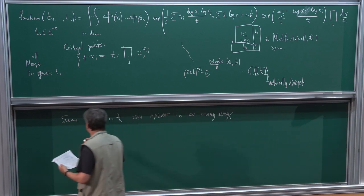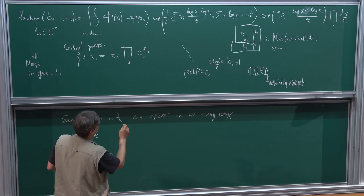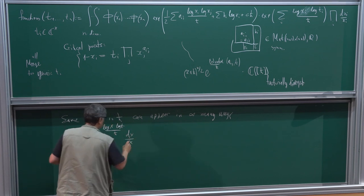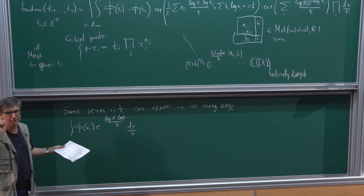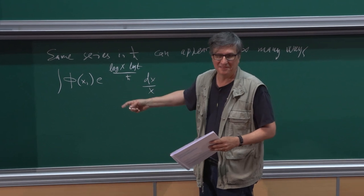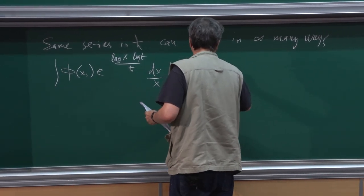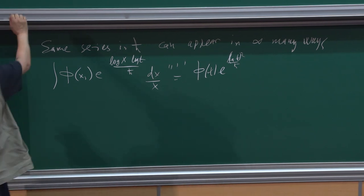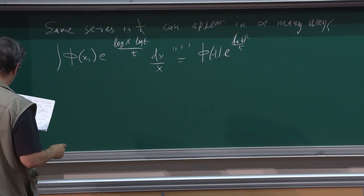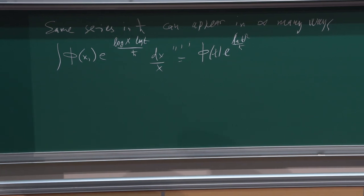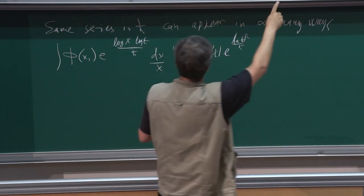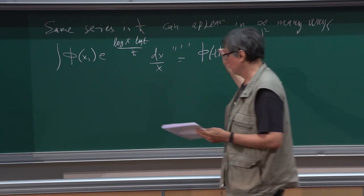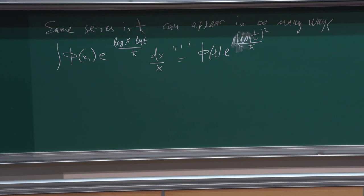There are many identities. For example, you can do a Fourier transform in logarithmic coordinates. You can do a Fourier transform — I don't have an exact formula in the notes, but it's essentially the same function of t, maybe multiplied by the exponent of (log t)², just like this. If you make a Fourier transform, you get the same function.